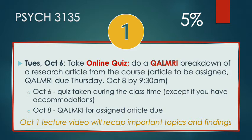So first we had a prelim worth 5%, the practice prelim. Instead of doing this multiple choice practice prelim, we're going to have a shorter quiz online and a QOMRI, which collectively will be worth 5% of your grade.